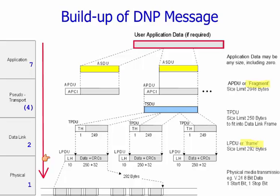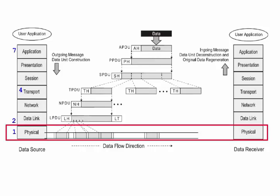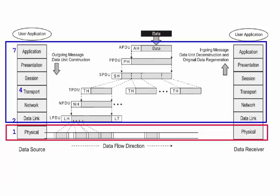Now let's start the discussion on the data link layer, which is the one just above the physical layer. We won't spend too much time on the physical layer — it's just the physical hardware link. Layers two through seven are all implemented in software.